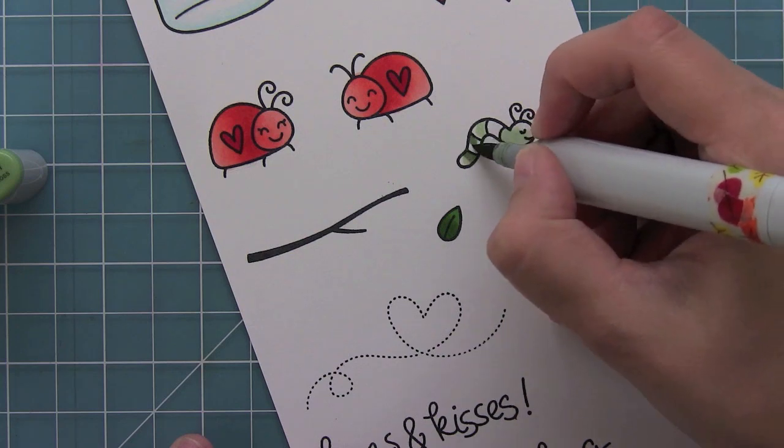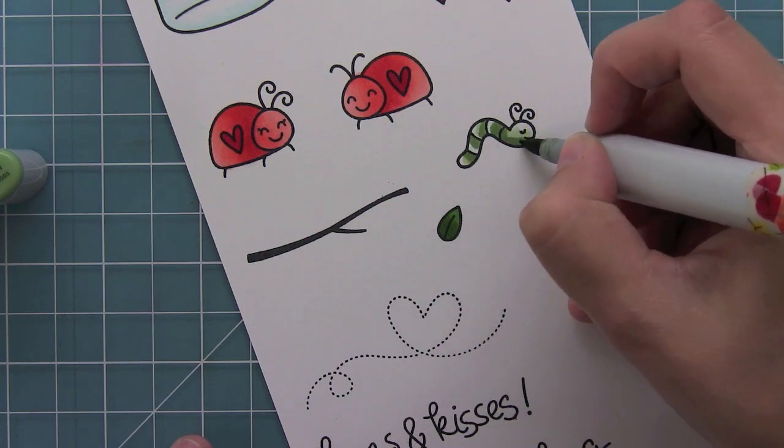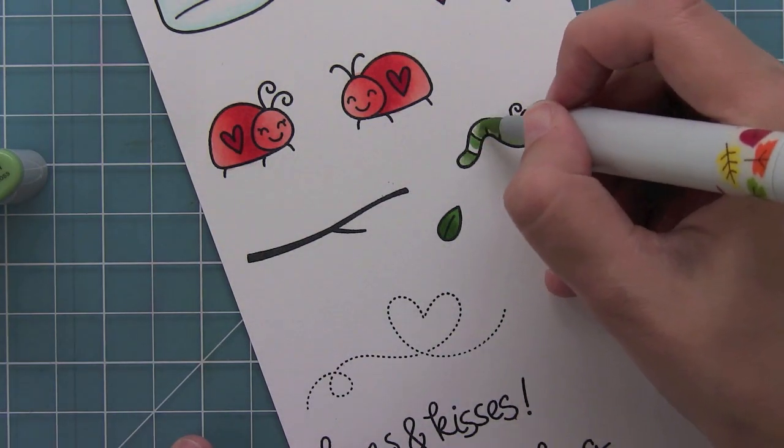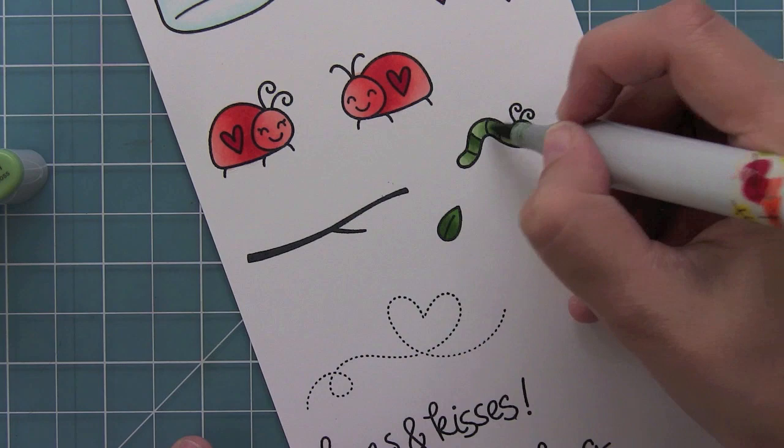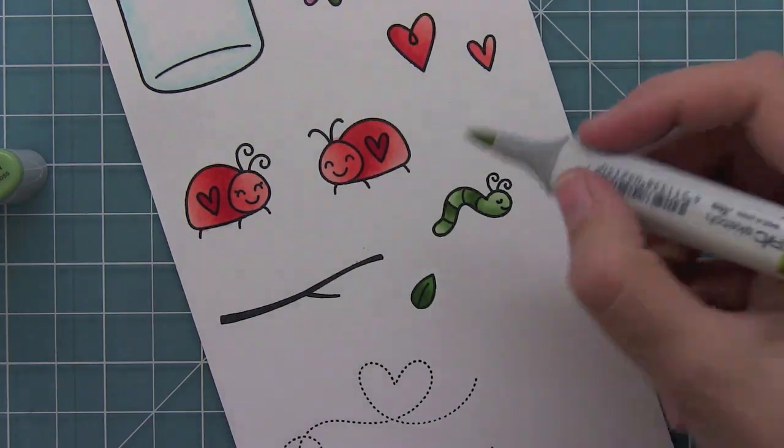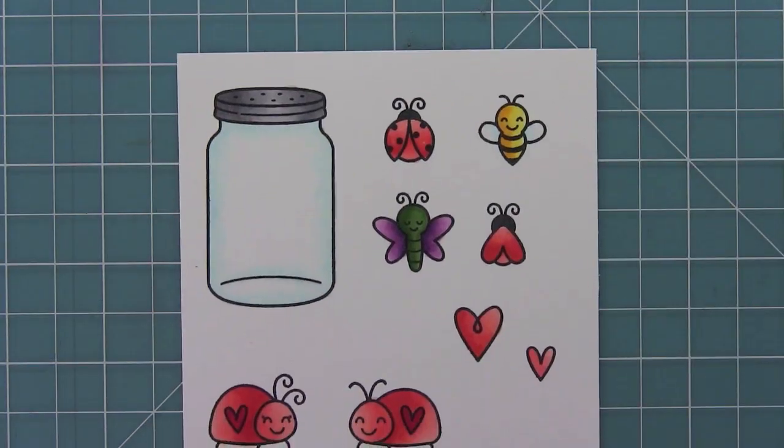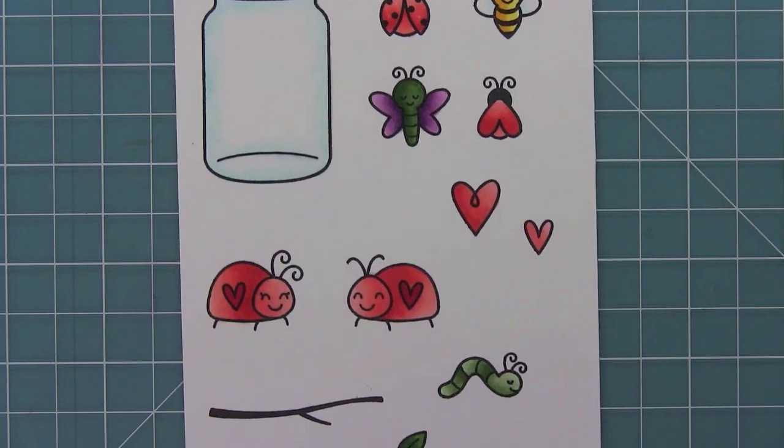For the worm here I used YG6163. And here you can see all of the images colored and brought to life.